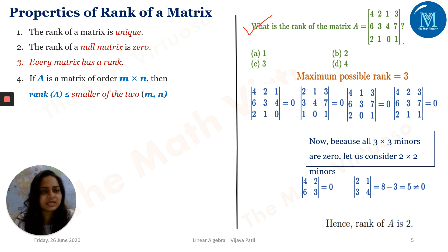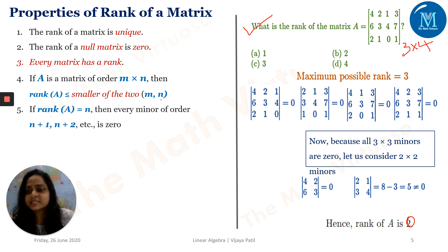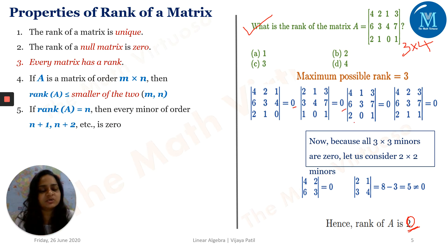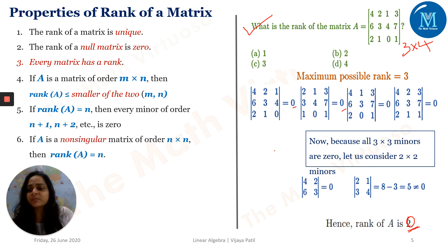Coming back to the example: the matrix is 3×4, so m=3 and n=4. We got rank = 2, which is smaller than both three and four — confirming rank ≤ min(m, n). Next property: if rank of A equals some value r, then every minor of order r+1, r+2, etc. is zero. In our example, rank = 2, and indeed all 3×3 minors were zero — every minor greater than rank r must be zero.